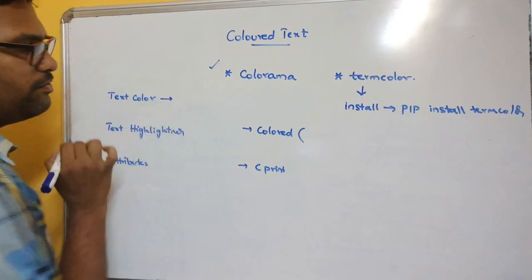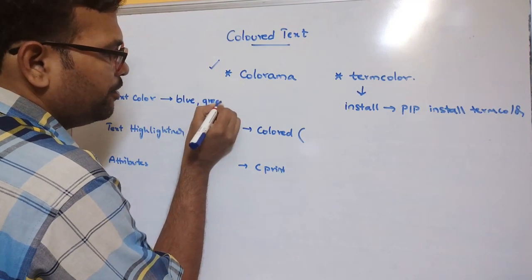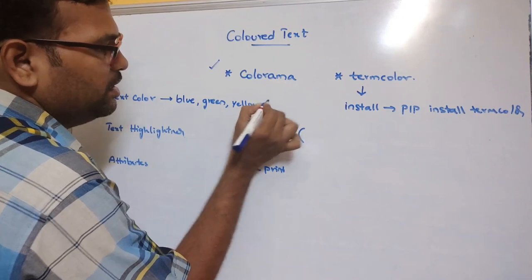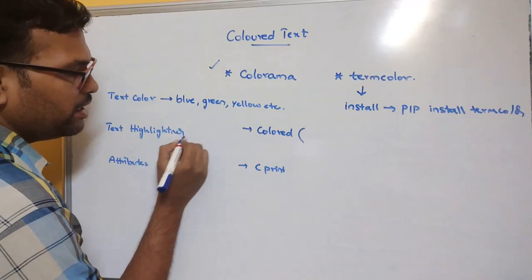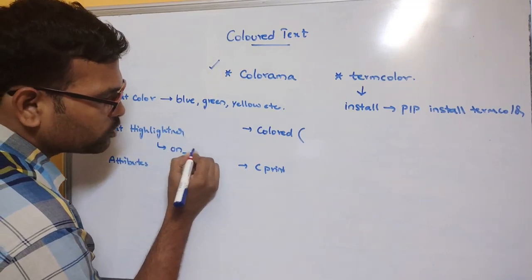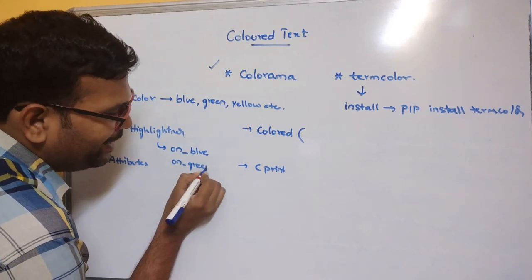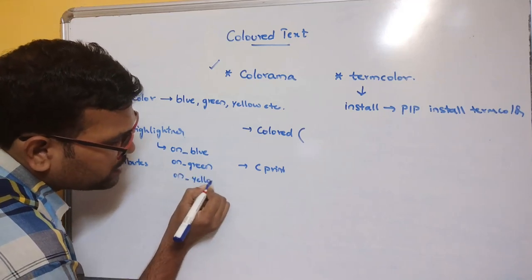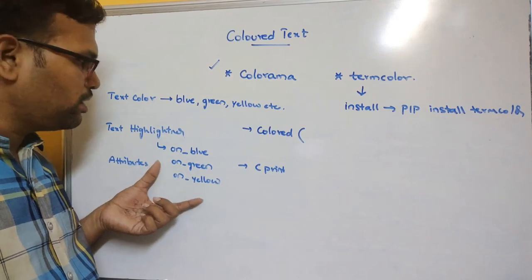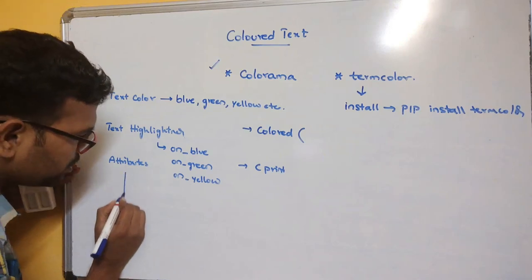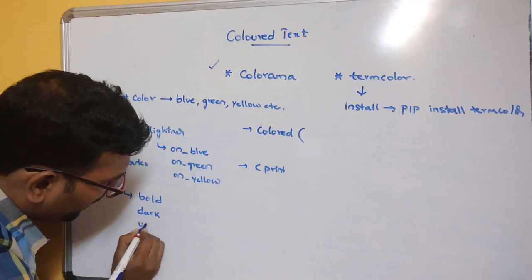In termcolor, the text color is represented in lowercase characters — like 'blue', 'green', 'yellow', etc. The highlight is represented as 'on_COLOR' — for example: on_blue, on_green, on_yellow. This on_COLOR represents the background color. The attributes can be: bold, dark, underline, reverse.